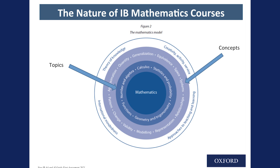From that circle, we move out and look at 12 concepts that can serve as wonderful conceptual lenses as you are designing your units of study. And then the outer ring includes those very important components of any diploma program: theory of knowledge, creativity activity service, the approaches to teaching and learning, and also international mindedness.